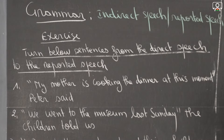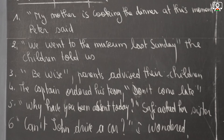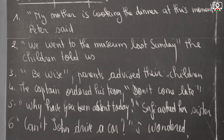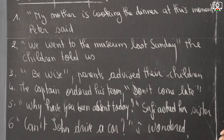Number two: 'We went to the museum last Sunday,' the children told us. Number three: 'Be wise,' parents advised their children. Number four: The captain ordered his team, 'Don't come late.' Next: 'Why have you been absent today?' Safi asked her sister. And the last sentence is: 'Can't John drive a car?' I wondered.